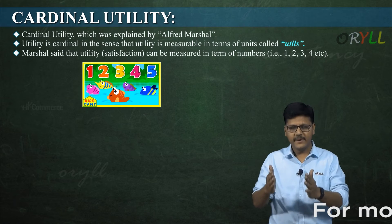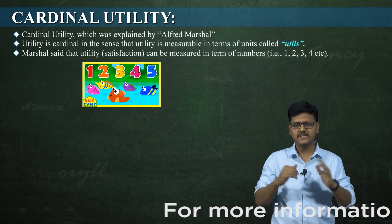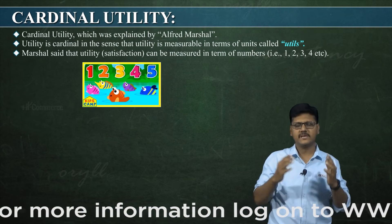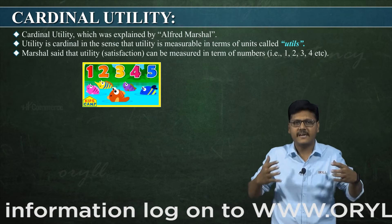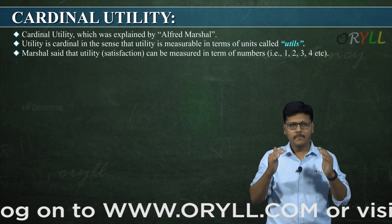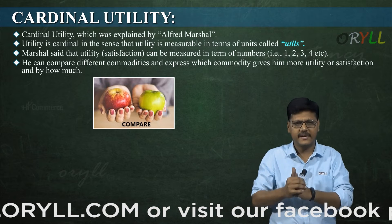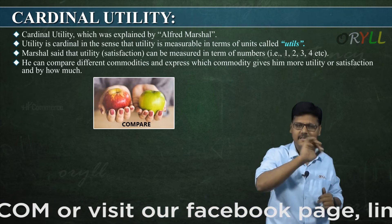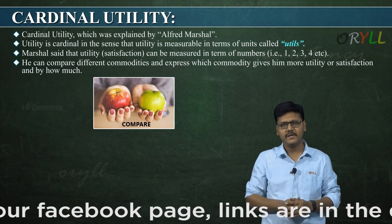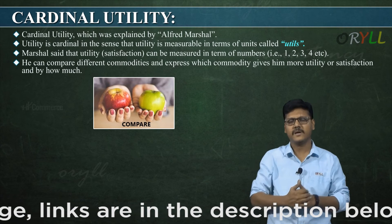For example, using a commodity I got 5 units of satisfaction, or 2 units, or 3 units — I can express my satisfaction levels in numbers. A person can compare different commodities and express which gives more utility and by how much with the help of cardinal utility. Getting 2, 3, or 4 units of utility means I can compare and say from which I got more satisfaction.